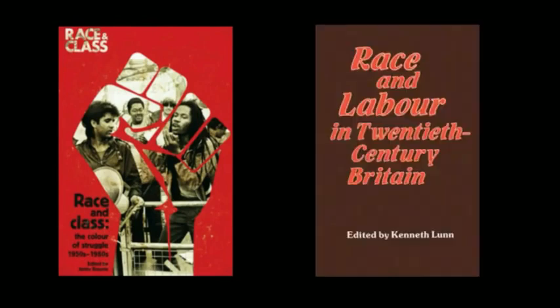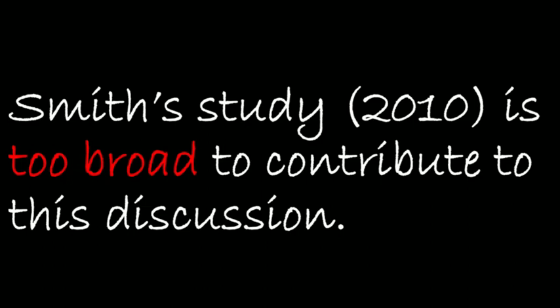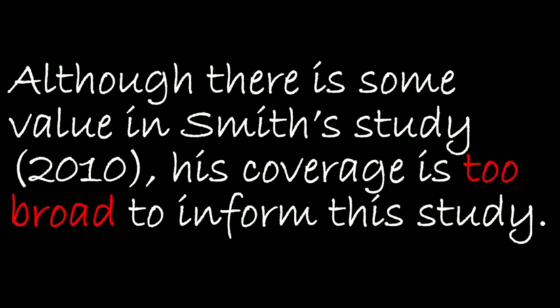For example, if your assignment topic is focused on the UK, you can critique a text that looks at the whole of Europe. If your topic looks at a specific population, you can critique a study that looks at the whole population. If your topic is focused on the 1990s, you can critique a text that covers the entire 20th century. Here are some examples: 'Smith's study is too broad to contribute to this discussion — his study is too generic, too wide, too extensive, too vast to contribute to your focused investigation.'